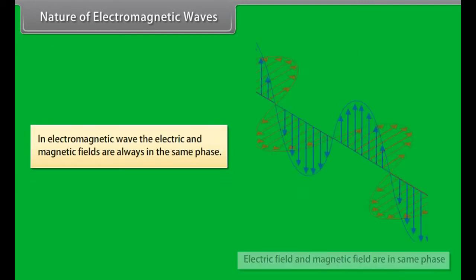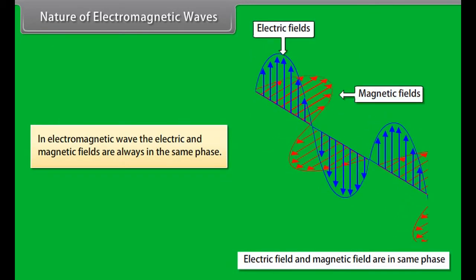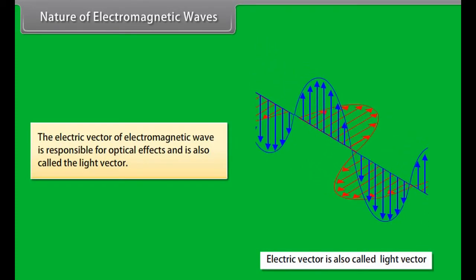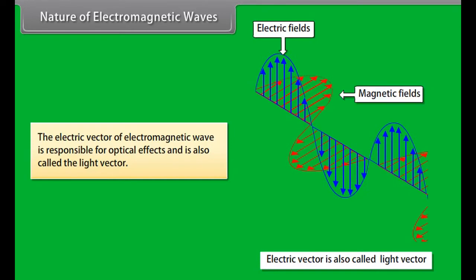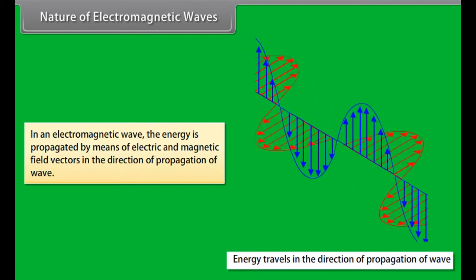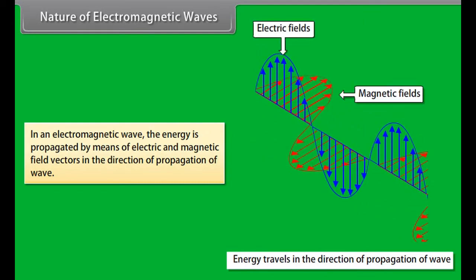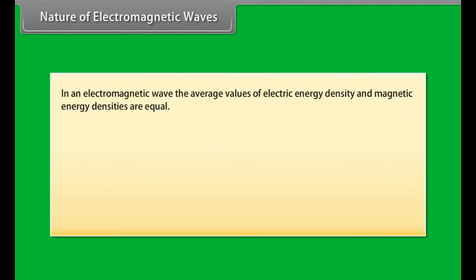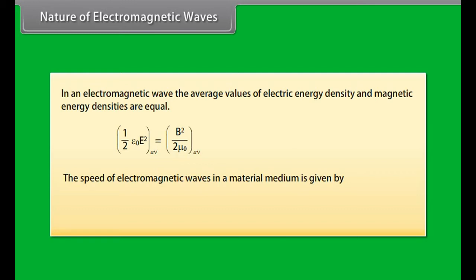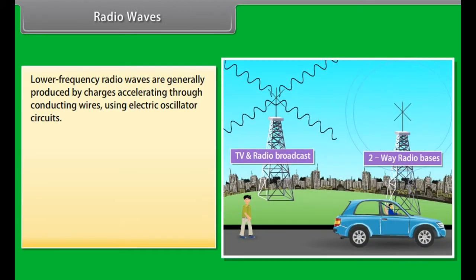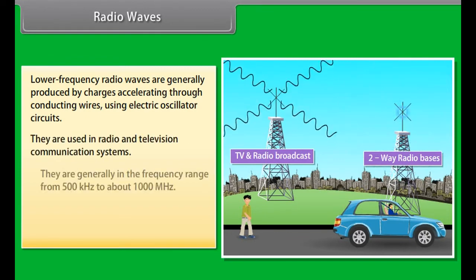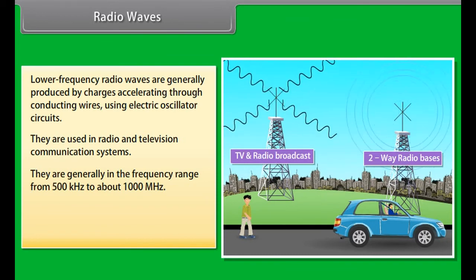Nature of electromagnetic waves. Electromagnetic waves are neutral, so they are not deflected by electric and magnetic fields. The electromagnetic waves show properties of reflection, refraction, interference, diffraction and polarization. In electromagnetic wave, the electric and magnetic fields are always in the same phase. The electric vector of electromagnetic wave is responsible for optical effect and is also called the light vector. In an electromagnetic wave, the energy is propagated by means of electric and magnetic field vectors in the direction of propagation of wave. In an electromagnetic wave, the average values of electric energy density and magnetic energy densities are equal. The speed of electromagnetic waves in a material medium is given by the relation nu is equal to C upon N.